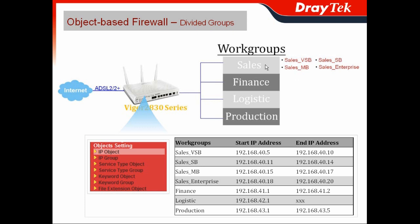How do you divide several workgroups for different objects in order to apply different firewall rules? You can use the object setting and then use the IP object. We know each PC user will have a different IP address, so you can use those different IP addresses to create IP objects.